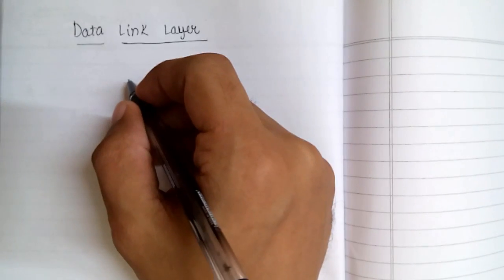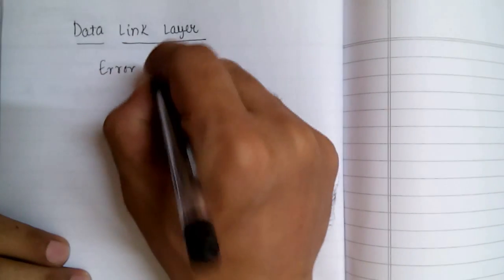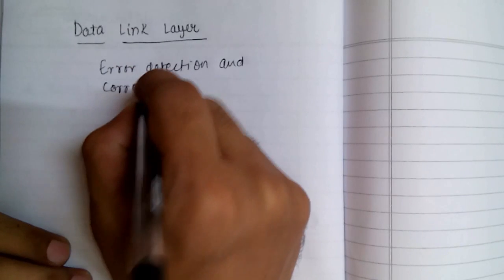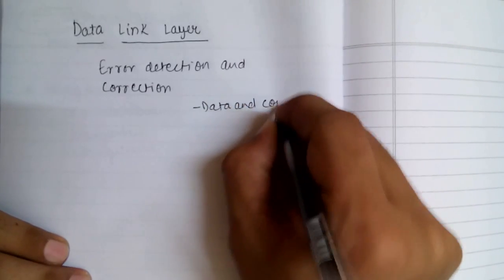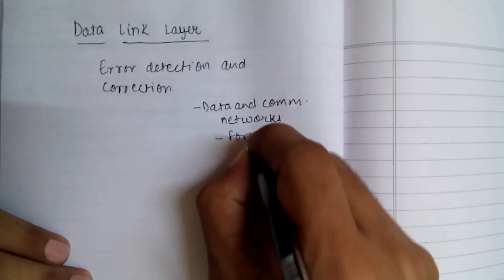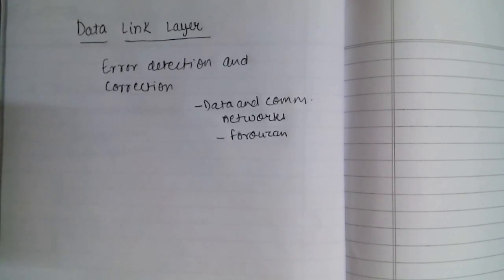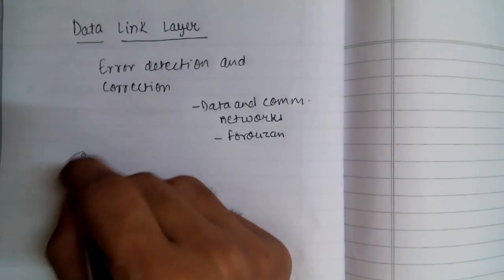Hi everyone, this is the first video in our data link layer series. The first topic we are going to talk about is error detection and correction. The reference book used for this topic is 'Data and Communication Networks' by Forouzan. As we transfer data, we want our data to be as accurate as possible, but it gets corrupted during transmission.